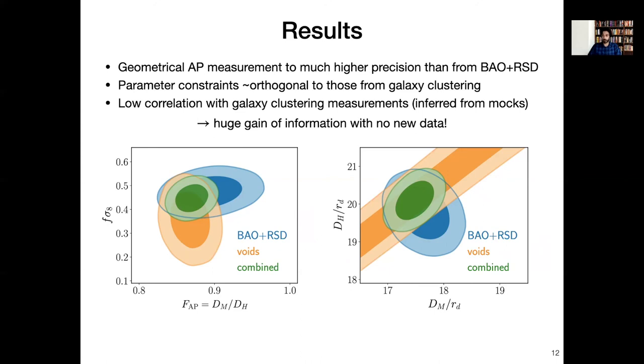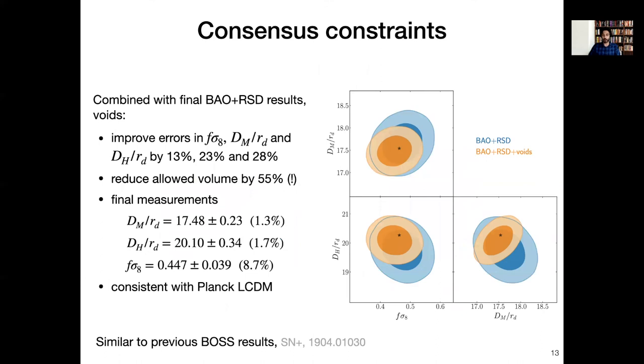The parameter constraints that we get are also almost orthogonal to those from galaxy clustering, and so there's a huge amount of information that we can gain from combining these two analyses without requiring any additional data. So we provide this consensus combination result and that corresponds to these green contours in this plot, and that's also then represented in this triangle plot on this slide. And we find that by combining the void galaxy analysis with galaxy clustering we basically get large improvements in the errors and measurement of each of the three main parameters for these studies: the f sigma 8, dm over rd, and dh over rd. And the total parameter volume is reduced by up to 55 percent. So the constraints are summarized over here and these are perfectly consistent with Planck Lambda CDM and very similar to previous BOSS results from this paper.